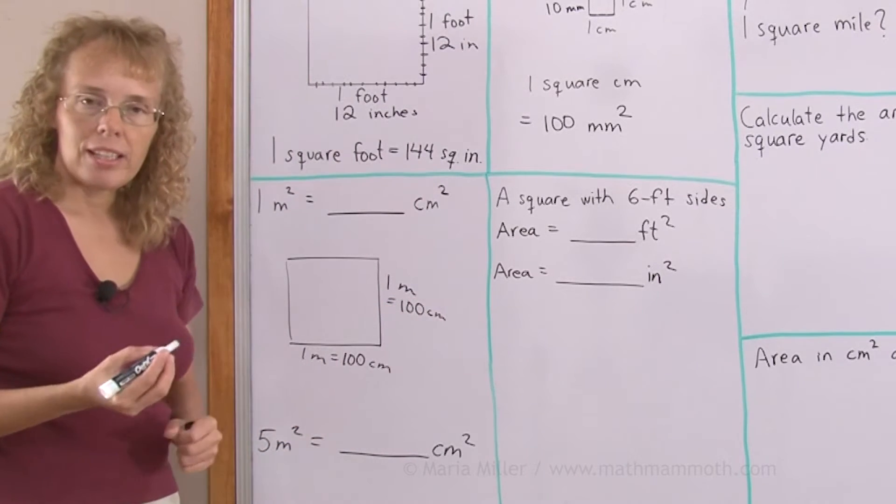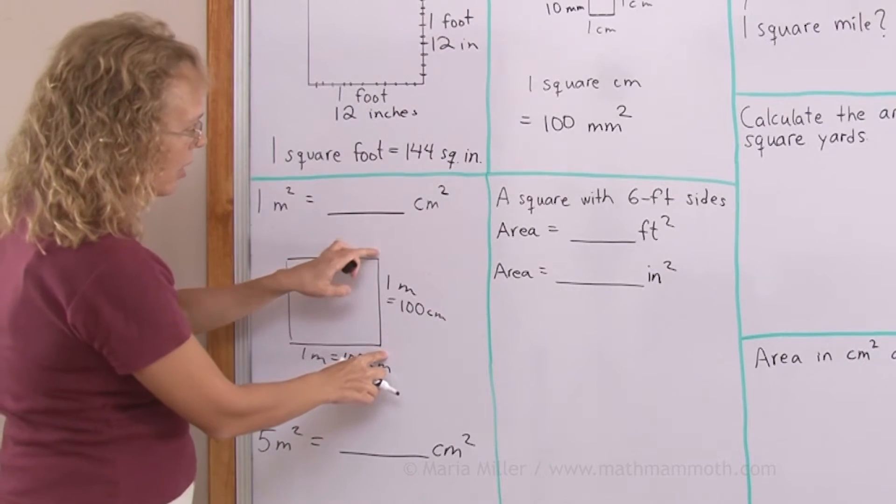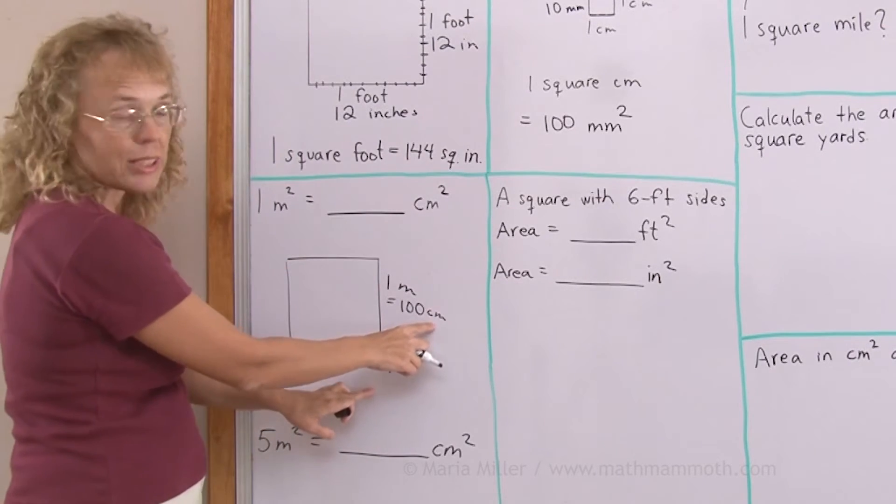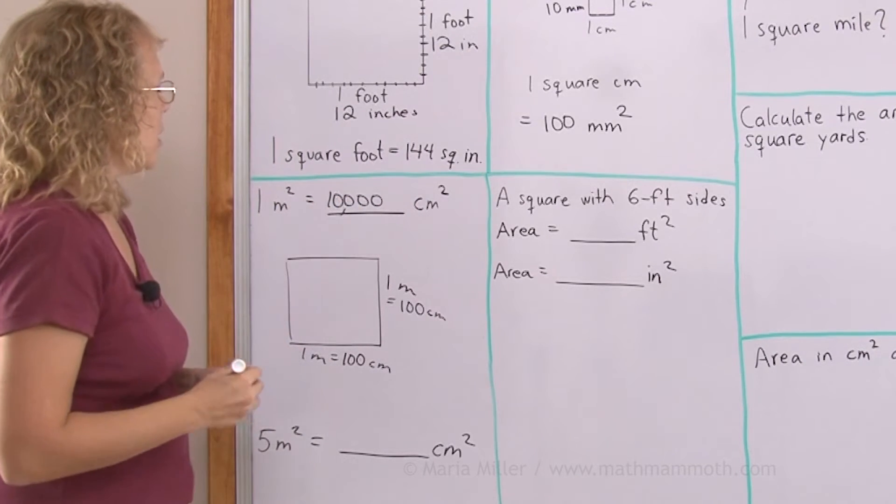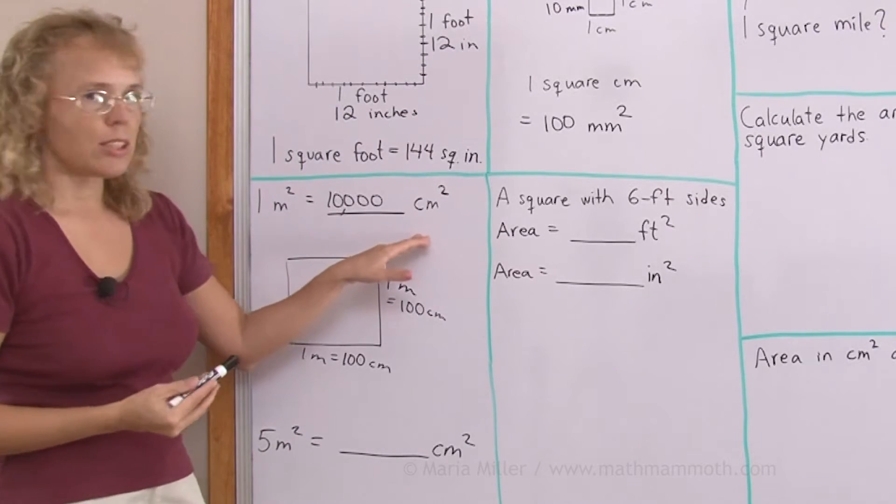And now we find the area by multiplying, 100 times 100, and then I get square centimeters. 100 times 100 is 10,000. So one square meter is 10,000 square centimeters.